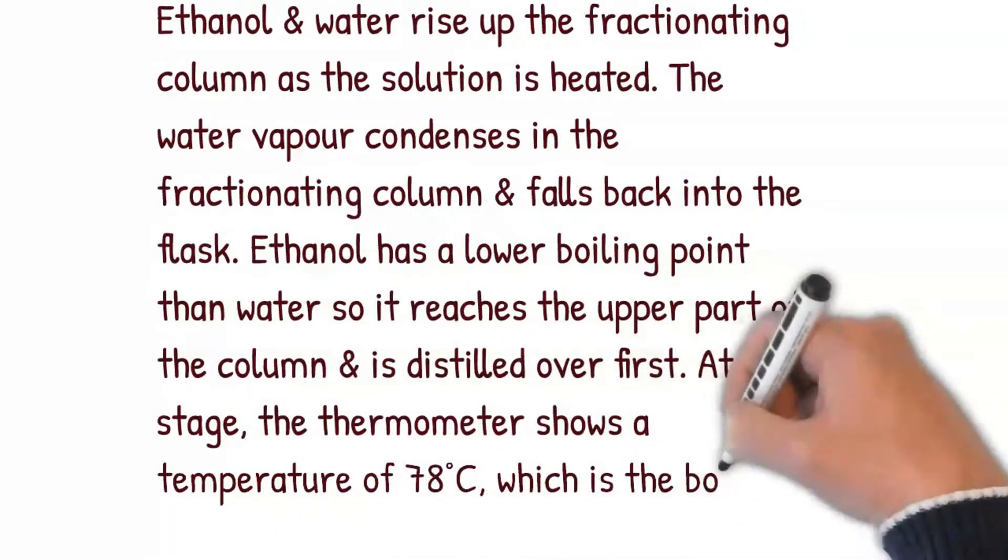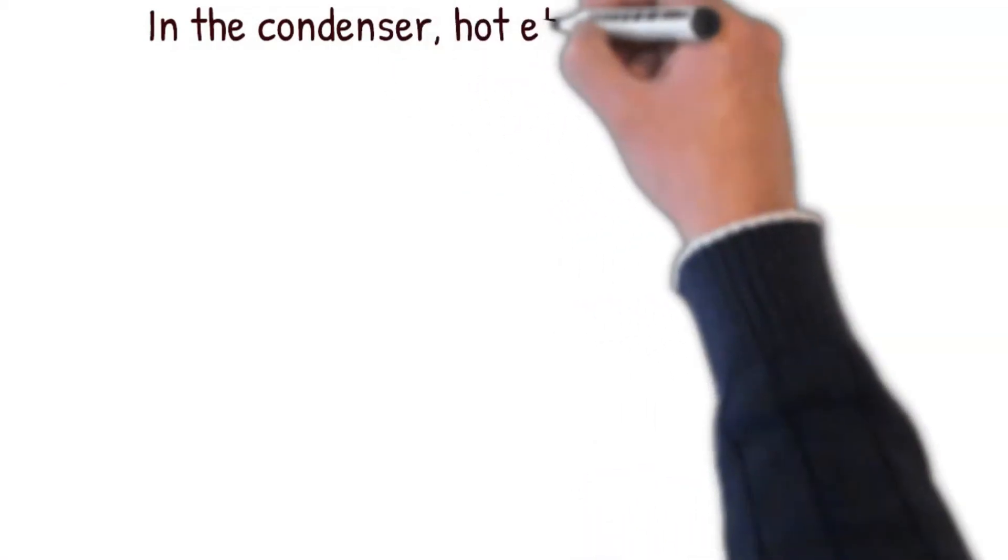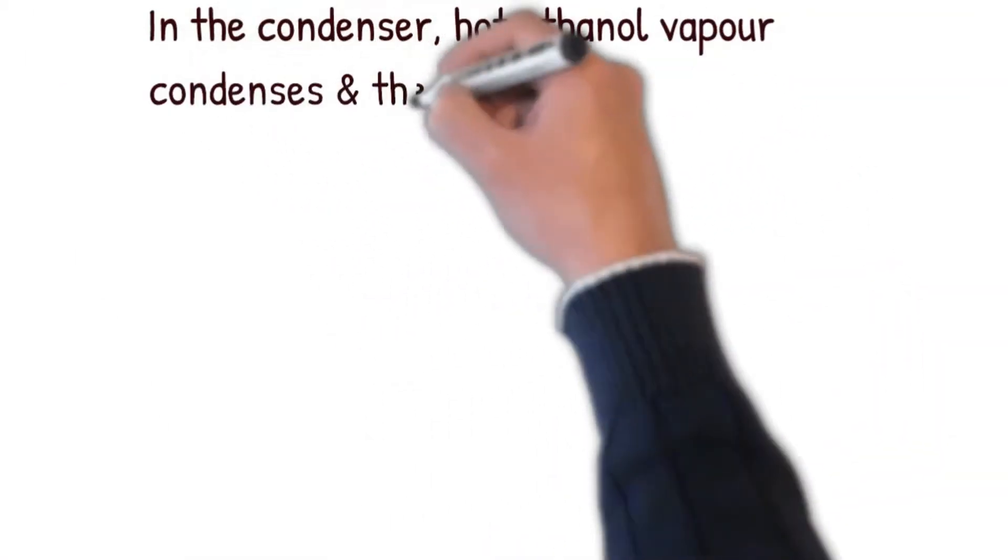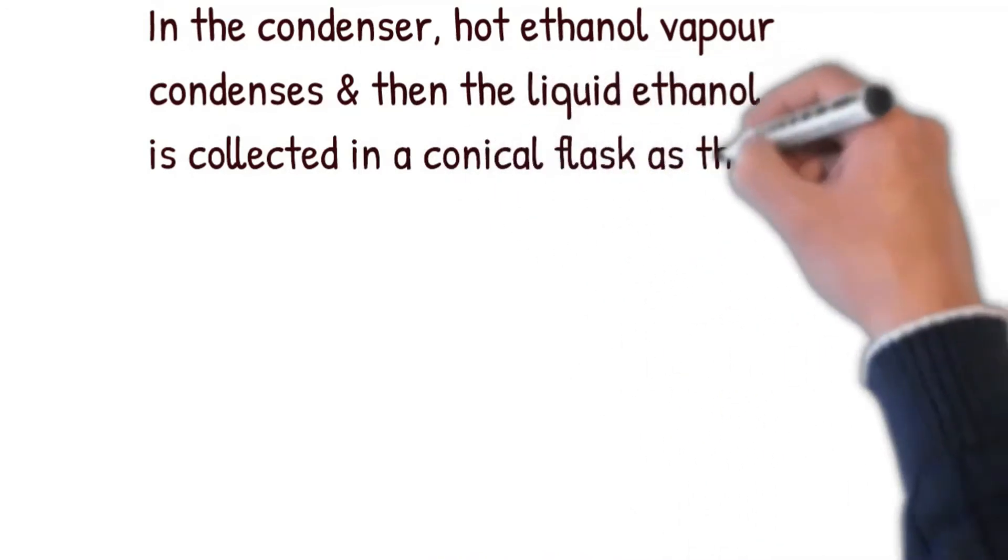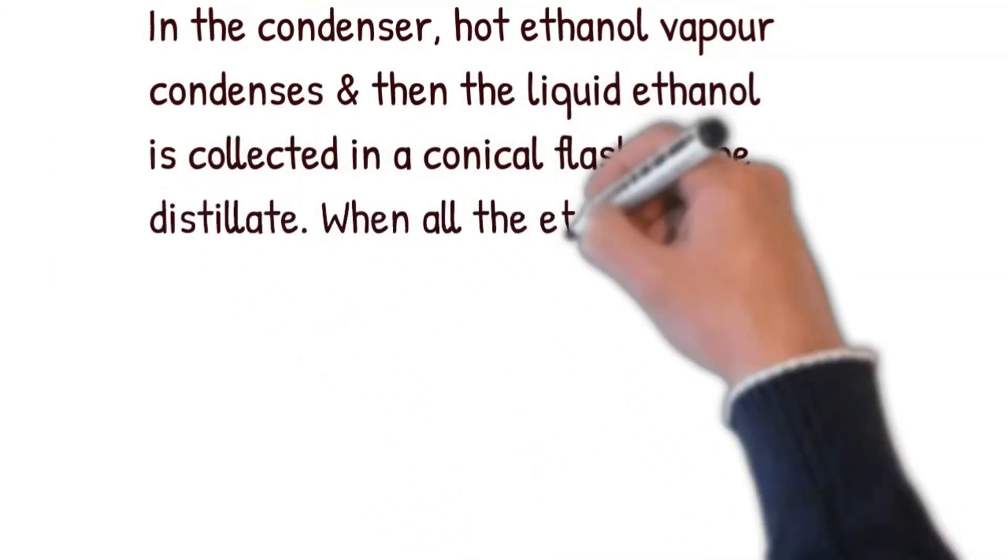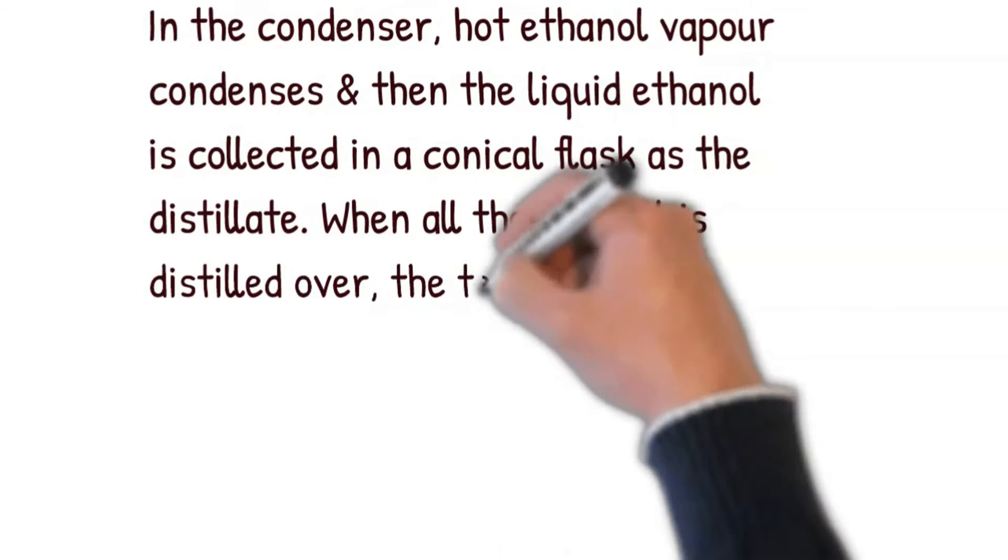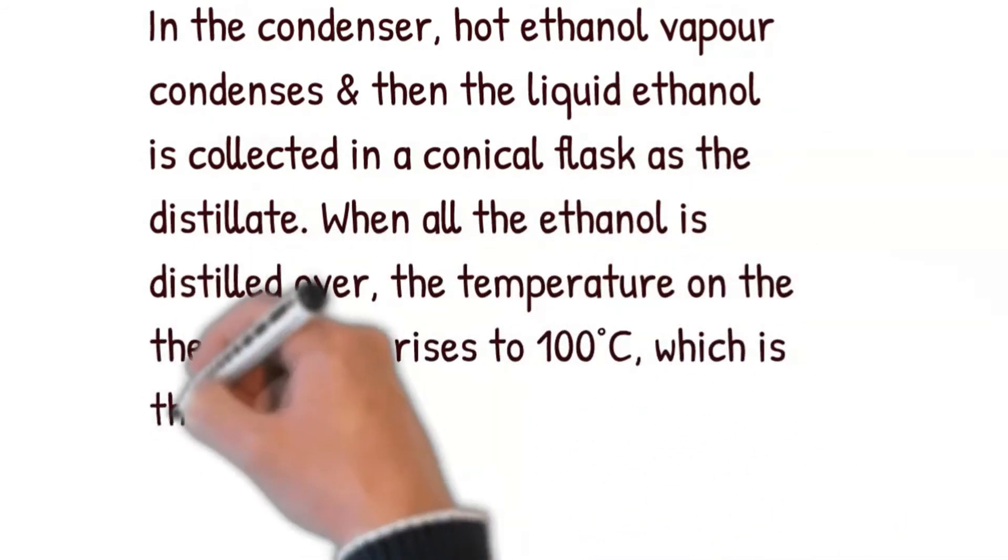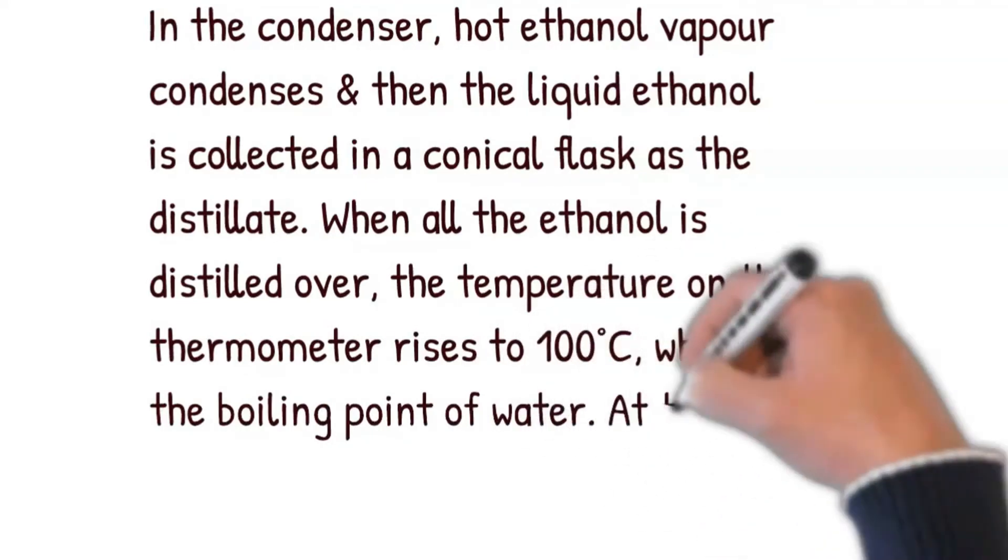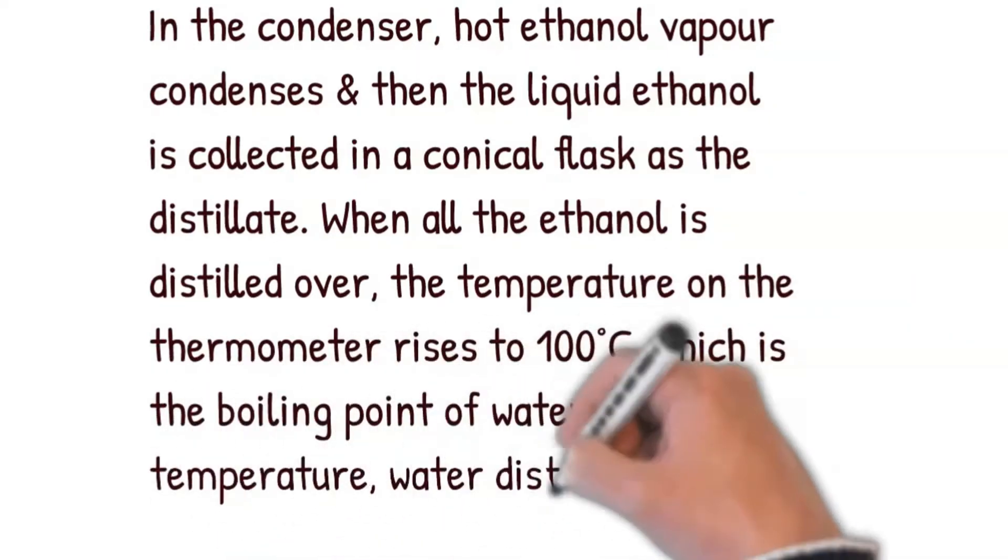In the condenser, hot ethanol vapor condenses and then the liquid ethanol is collected in a conical flask as the distillate. When all the ethanol is distilled over, the temperature on the thermometer rises to 100 degrees Celsius, which is the boiling point of water. At this temperature, water distills over and is collected separately.